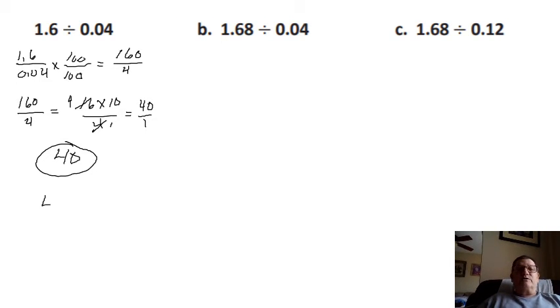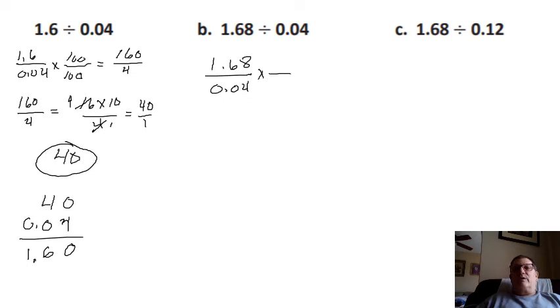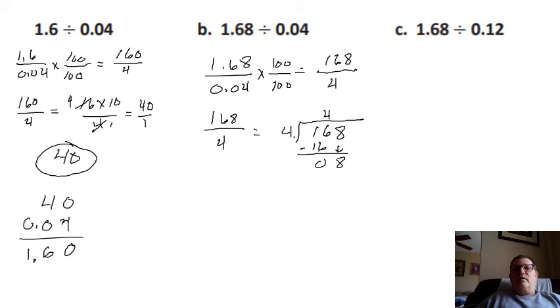Now we're going to double check it. We multiply it out, let's make sure: 40 times 4 hundredths, that'd be 0.16. You can see I need to put two decimals back in, so it checks out. Let's go to the next one: 1.68 over 0.04. Once again we have to get rid of that bottom decimal, so we're going to move two place values, multiply by 100, and that's going to give us 168 over 4. Four goes into 16 four times, four times four is 16. Bring down our 8, four goes into 8 two times, so our answer is 42.